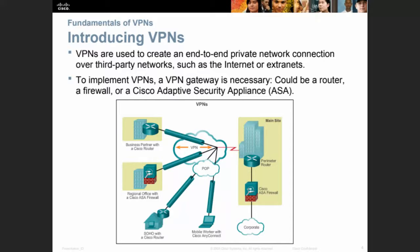The internet existed and everyone was happy, but the problem was it was not secure — especially for banking or accessing your intranet at work. So they came up with VPN. To implement a VPN, a VPN gateway is necessary, and this could be a router, a firewall, or a Cisco Adaptive Security Appliance, ASA.